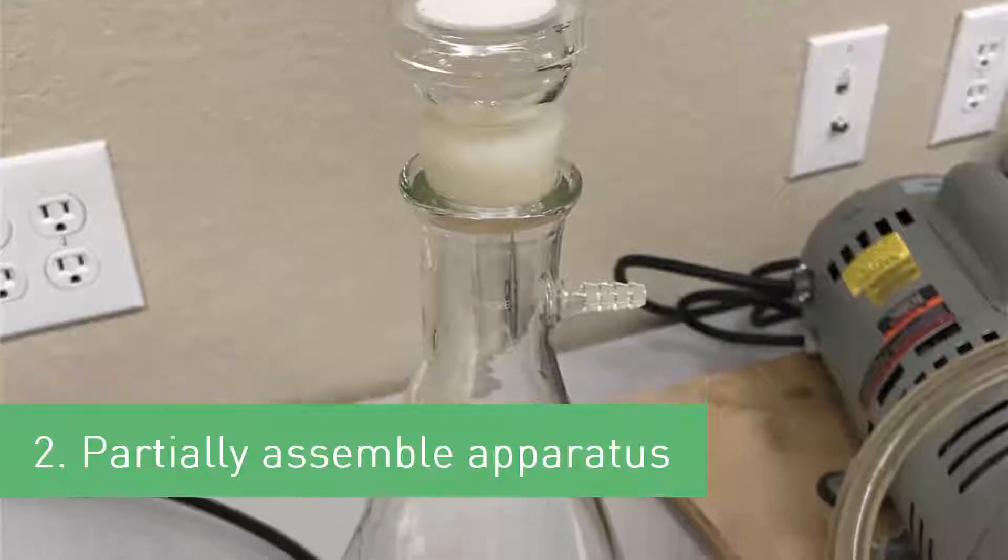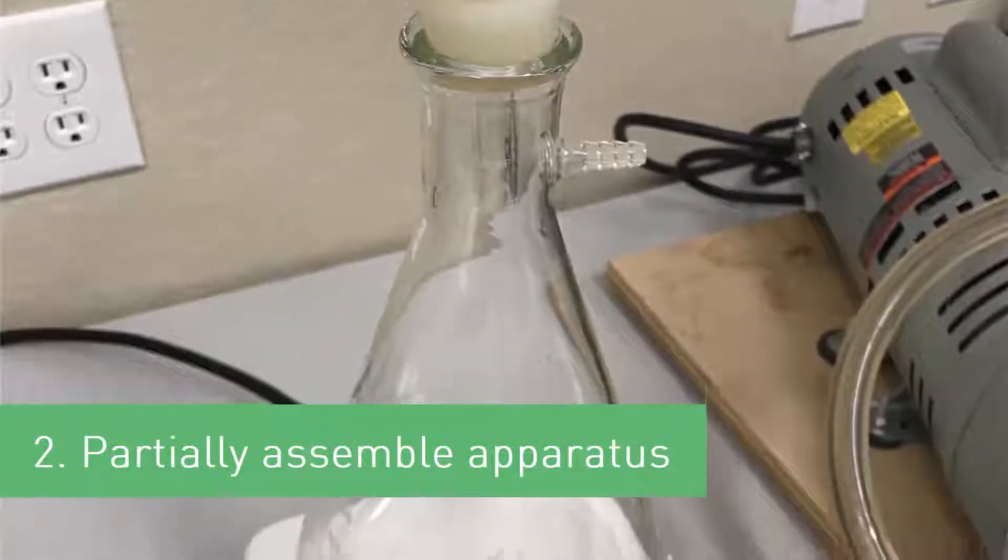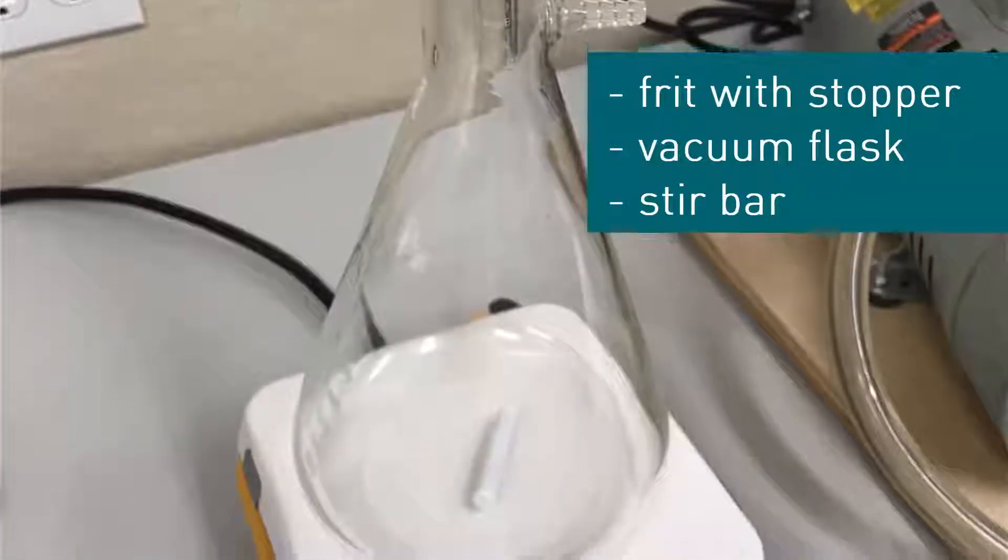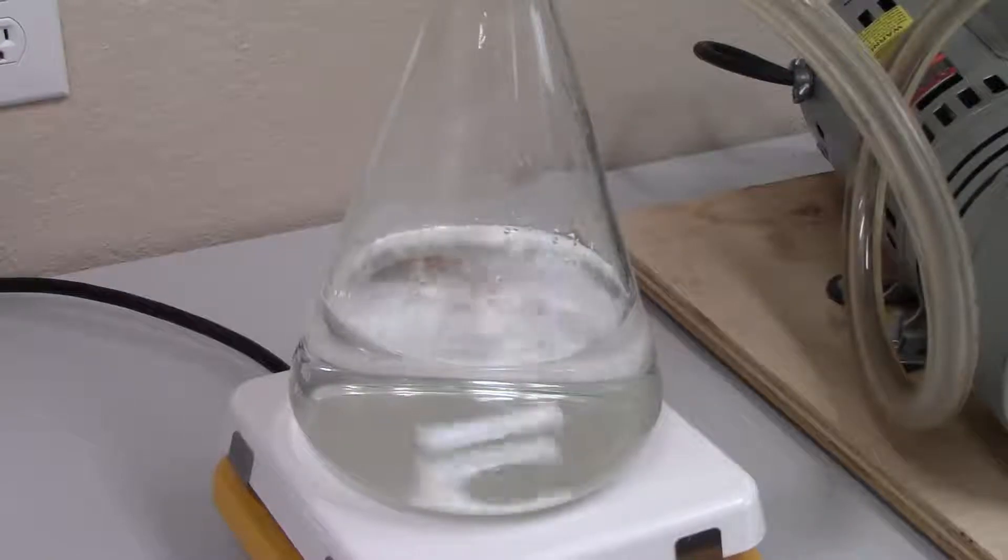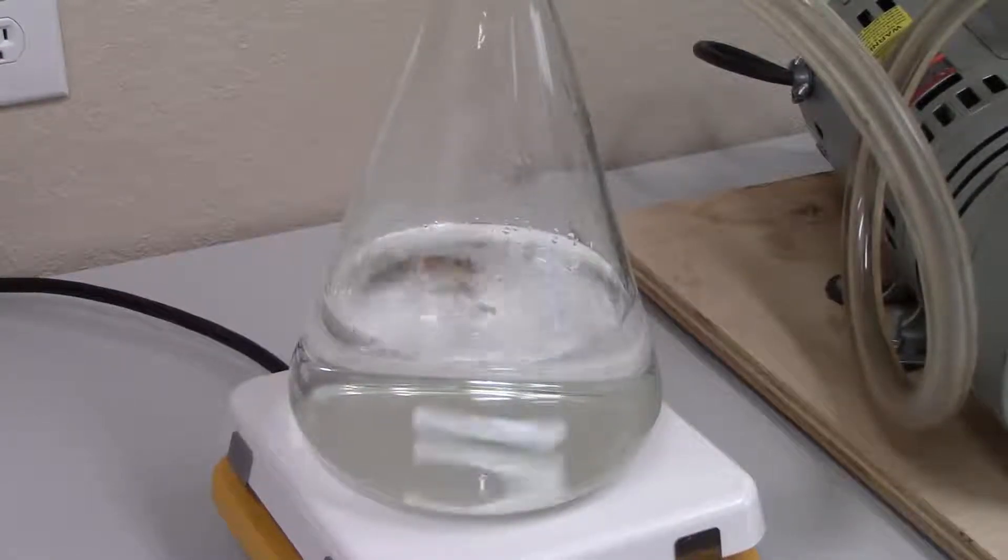While the salt is dissolving, I'll move to the second step, partially assembling the vacuum filtration apparatus. It is recommended to use a stir bar in the filter flask to agitate the filtrate while under vacuum, effectively degassing the mobile phase during the preparation process.